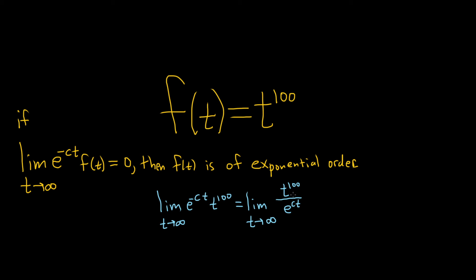Here it's clear that this limit is 0 because the exponential function grows faster, which is what we're basically trying to show. If you wanted to show this more rigorously, you could use L'Hôpital's rule. However, there's a t to the 100 here, so you would have to use it many times. So the function is of exponential order.